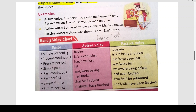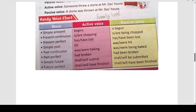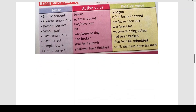यह handy voice chart है, इसको आपको by heart learn करना है। Different tenses में active voice passive voice में जाके क्या होता है: simple present में 'is begun'; present continuous में 'is/are being chopped'. You have to memorize this. Past perfect 'had' बन जाता है 'had been'. Simple future 'shall/will' बन जाता है 'shall/will be'. For this, you have to be very clear with your tenses chapter. If your tenses chapter is clear, then you can easily frame your active voice and passive voice.